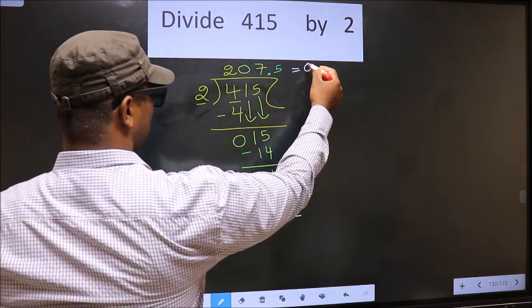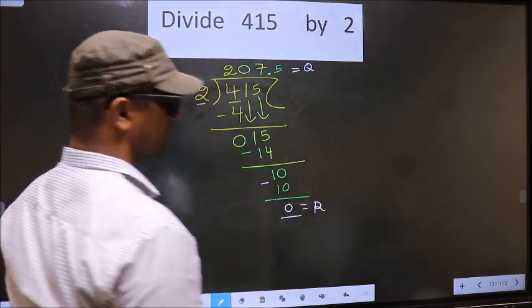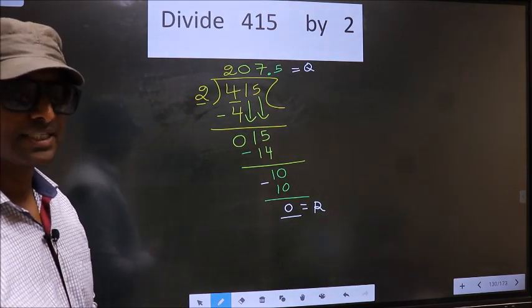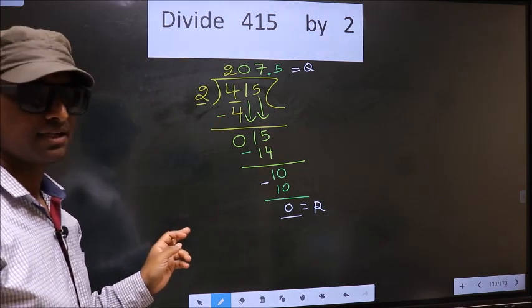So this is our quotient, and this is our remainder. Did you understand where the mistake happens? You should not make that mistake. Am I clear?